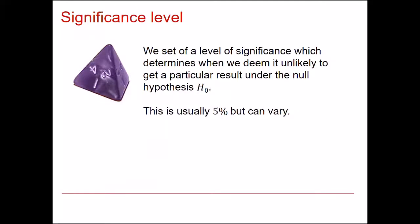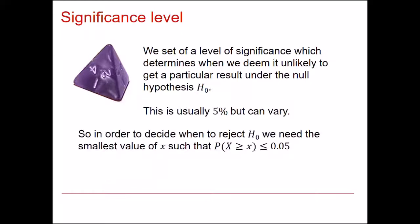So to answer this question, we need to set a level of significance, which determines when we deem it unlikely to get a particular result under the null hypothesis. Often this is 5%, but it might be 1%, 10% or any other value. In order to decide when to reject H0, we need the smallest value of X such that the probability of getting that or more in terms of number of ones to be less than that 5% that we've decided on for our significance level.